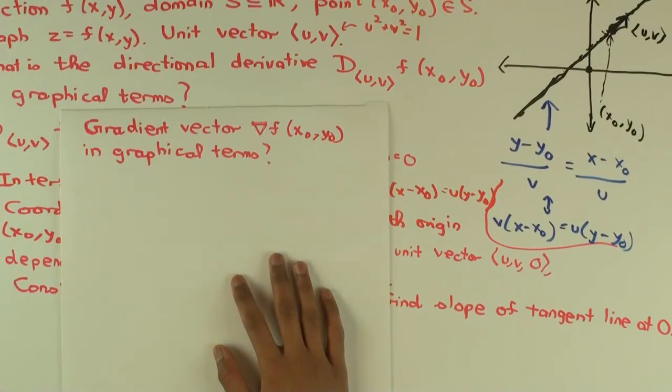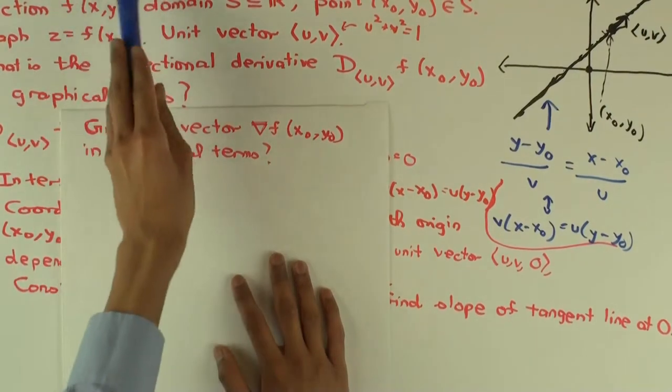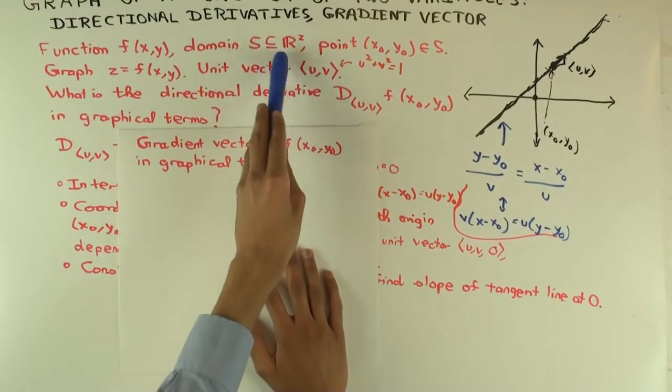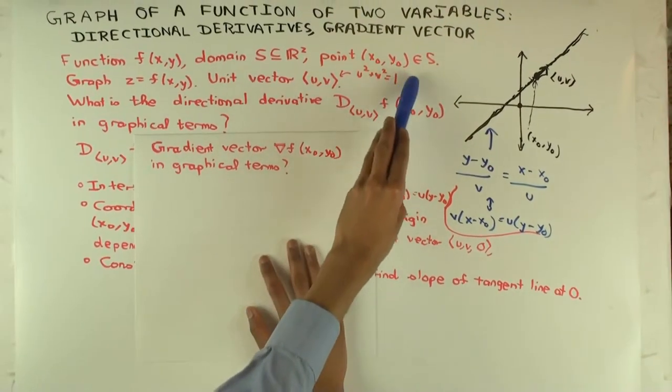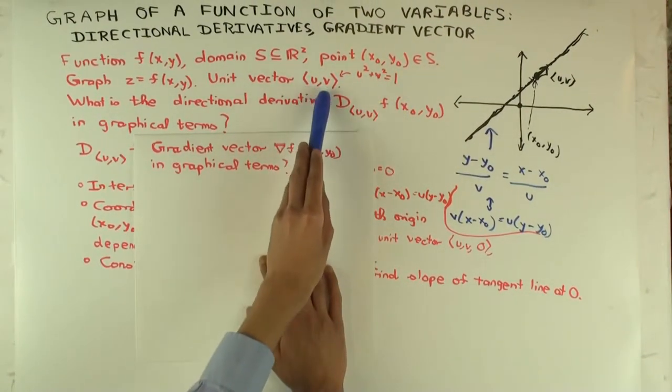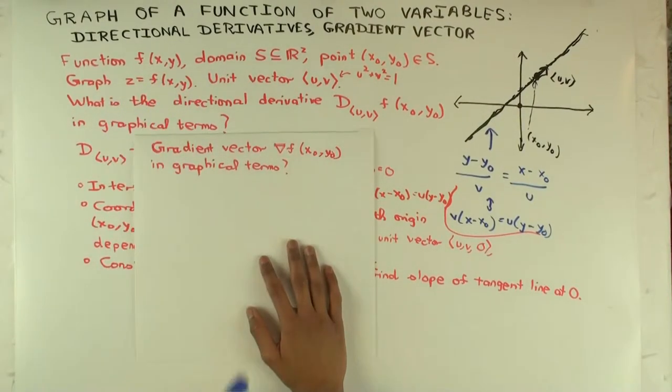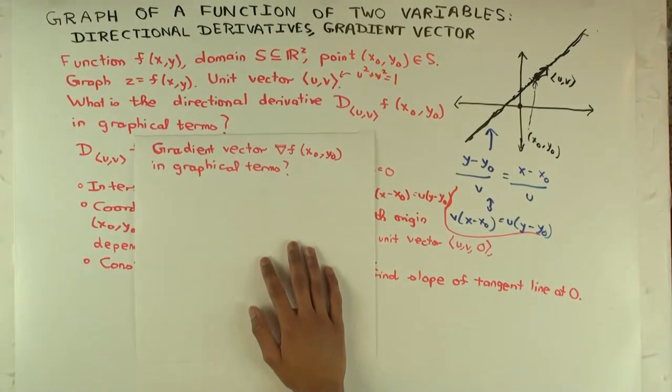Okay, so in the previous video we described how to find the directional derivative of a function of two variables f of x,y, domain subset of R², at a point (x₀,y₀) in the direction of a unit vector. In terms of the graph of the function z = f(x,y), what is the idea?